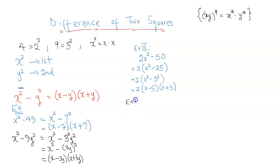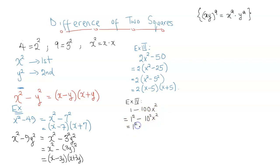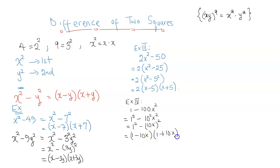One final example: 1 minus 100x squared. We know that 1 is a squared number, so this can be written as 1 squared minus 100 — which is 10 squared — times x squared. The next step is to merge 10 squared and x squared, which gives 10x all squared, going by the law of indices we used earlier. So clearly we have the difference of two squares: the first is 1 squared and the second is 10x all squared. This gives us 1 minus 10x in parentheses times 1 plus 10x in parentheses.